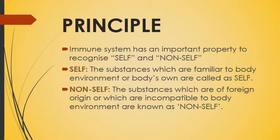What is the principle of immunity? On what particular property does the immune system work? The immune system has an important property to recognize self and non-self. Self are the substances which are familiar to the body environment or body's own — the cells which are present in our body, which the body is made up of, they are part of the body, they are growing, they are developing. That is what is called self.